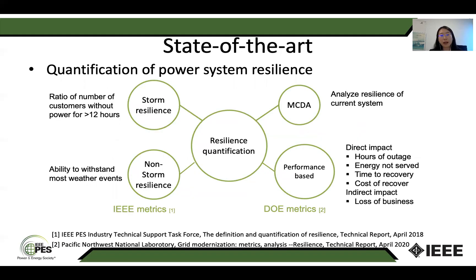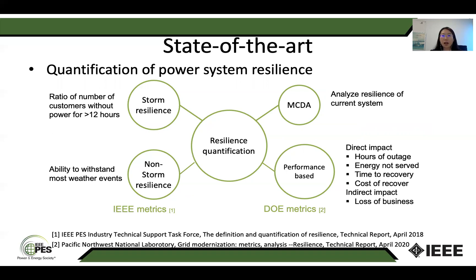According to the state of the art study, there are several metrics that can quantify the power system resilience, such as the IEEE metrics and the DOE metrics, developed by the Department of Energy in the US. Such metrics can quantify the resilience from the perspective of storm resilience — the ratio of number of customers without power for more than 12 hours — and non-storm events. The DOE metrics can also evaluate resilience based on hours of outage, energy not served for customers, time to recover to normal stage, and loss of business.